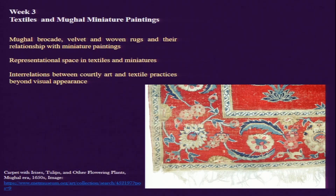We will also be touching upon the interrelations between courtly art and textile practices beyond visual appearance. Since we are talking about representational space and what is depicted visually, we are getting into iconographic analysis — whether there are symbolic meanings, metaphors, or how those visuals came into being. If we think about the interrelation between courtly art practices and textile practices, we need to understand there are more resemblances than just visual ones, including their structure, material, and the techniques in which they are built.